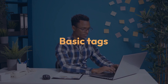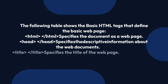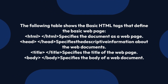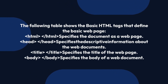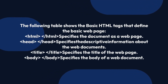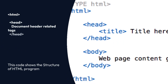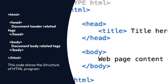Basic tags. The following table shows the basic HTML tags that define a basic web page. The HTML tag specifies the document as a web page. The Head tag specifies the descriptive information about the web document. The Title tag specifies the title of the web page. The Body tag specifies the body of the web document. The code on screen shows the structure of an HTML program.